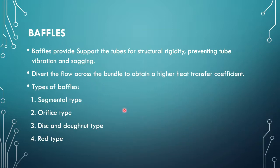Next are baffles. Baffles are mainly used to provide support for the tubes for structural rigidity, preventing tube vibration and shaking. Baffles also divert the flow across the bundle to obtain a higher heat transfer coefficient.